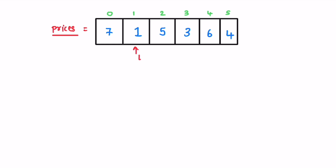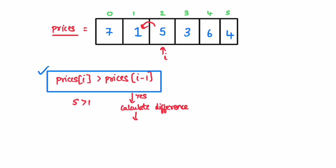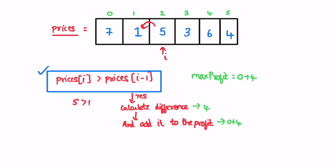So we start an iteration from the second element — i will be pointing at the second element. Now we compare the current price at i with its previous value. Here, one is less than seven, so this condition will fail, so we simply ignore that and go on to the next iteration. Now i is pointing at the next element. It will check with the previous element — five is greater than one. So if this condition passes, we calculate the difference and add it to the profit. Max profit is initially zero. Since five is greater than one, the difference is four. We add it to the profit: zero plus four, so profit is now four.